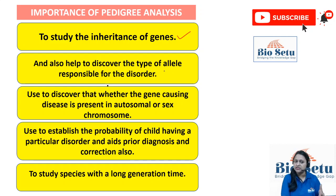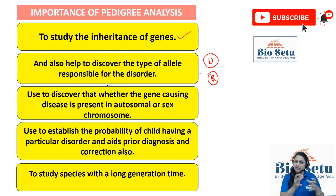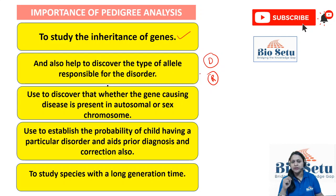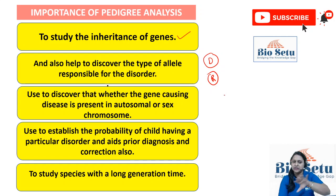Pedigree also helps to discover the type of allele responsible for the disorder — which allele is responsible, dominant or recessive? If it is a dominant allele responsible, there will be a different pattern of flow in the pedigree. If a recessive allele is responsible, there will be a different pattern. Knowing this plays a very important role. If we know it is because of a dominant allele, we immediately know that one allele can cause disease. If it is a recessive allele, we know it needs two alleles, and a diseased individual is certainly in a homozygous condition.